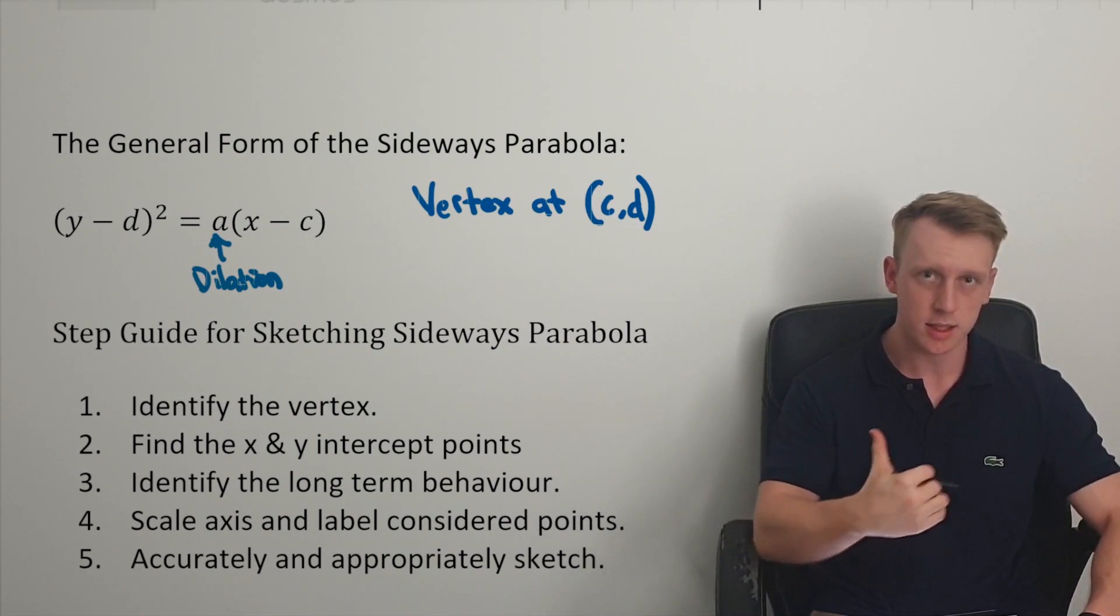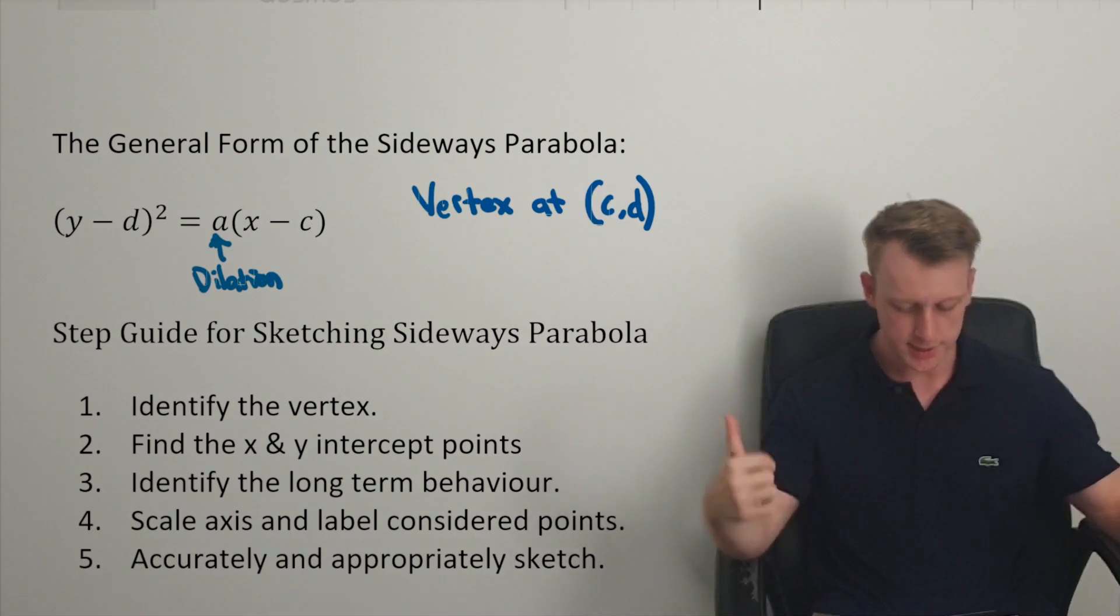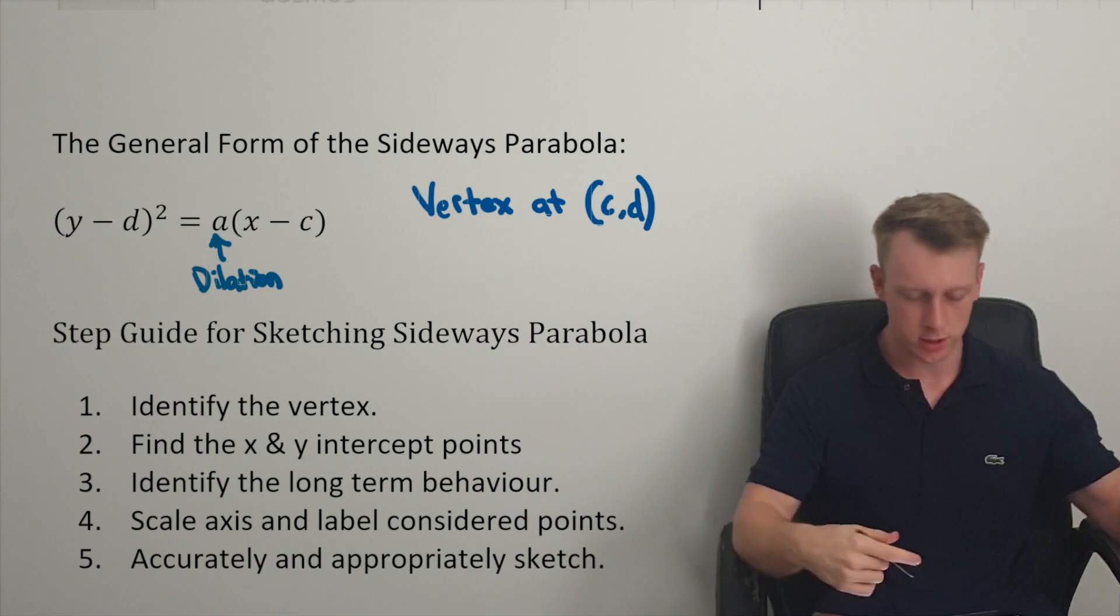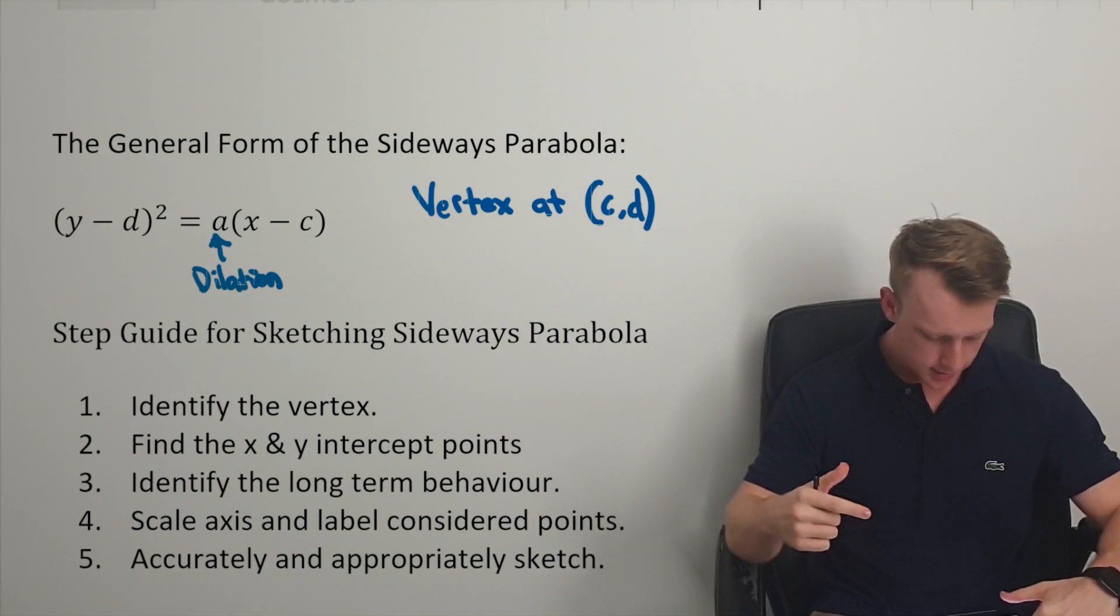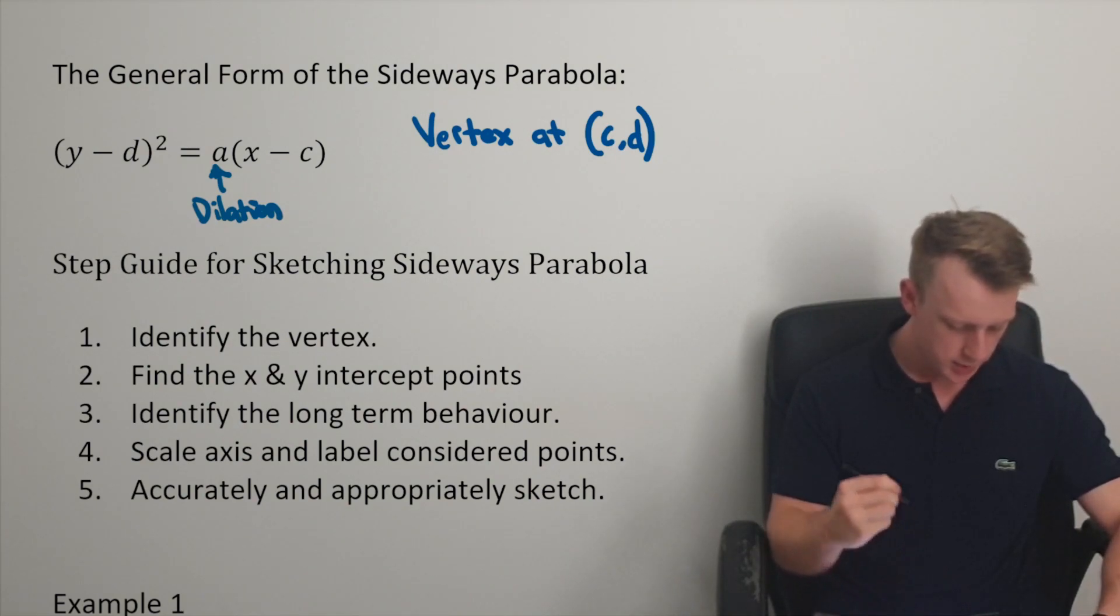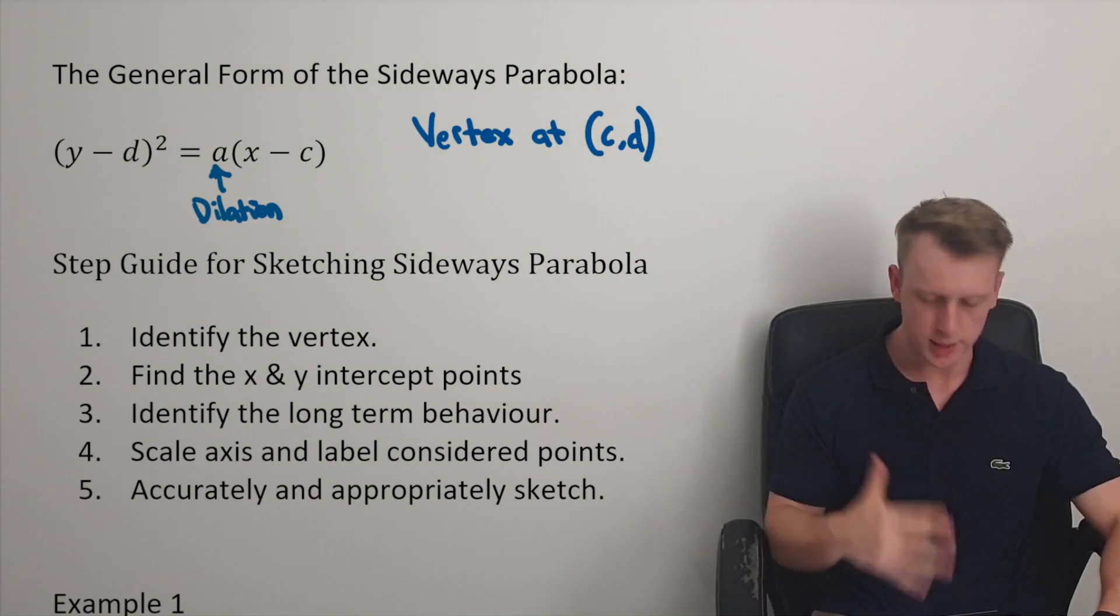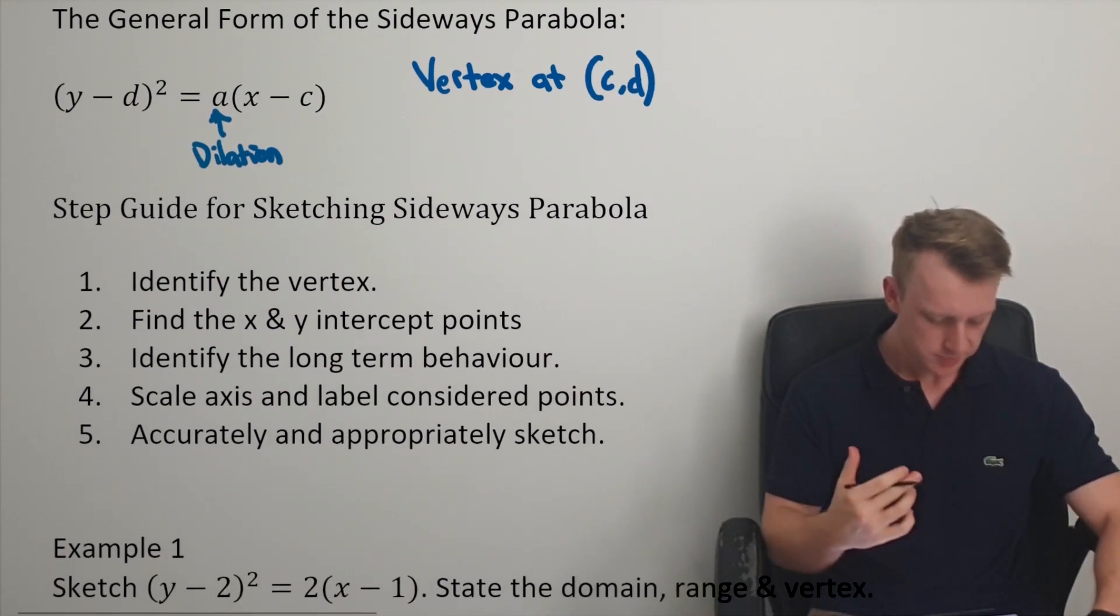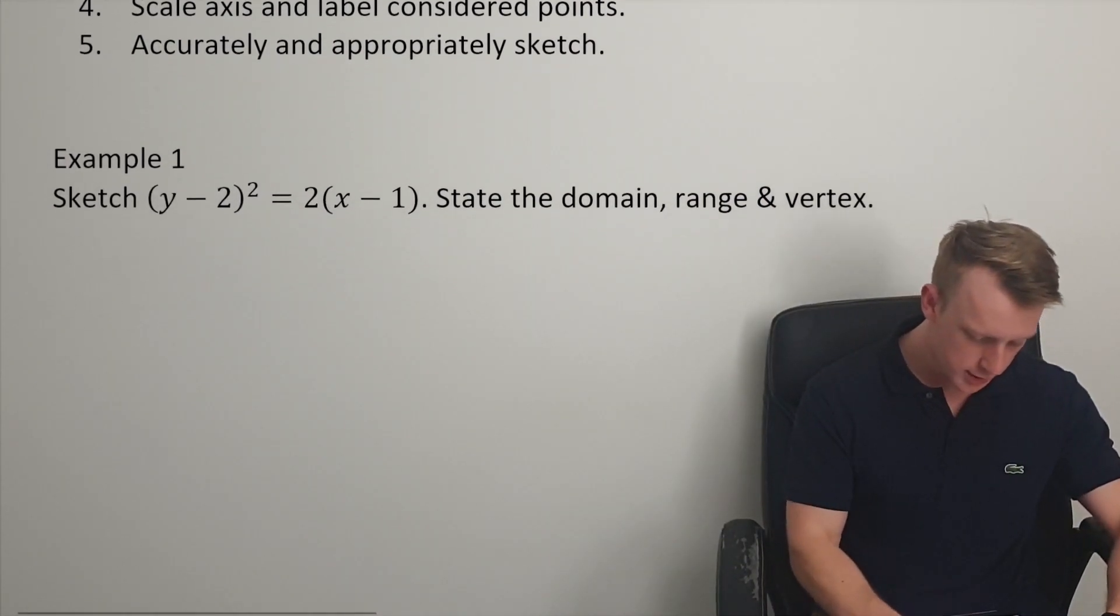c is in the x transformation. d is in the y transformation, so c, d. How we sketch it is we identify the vertex, find the intercepts, look at the long-term behavior, and then sketch it.